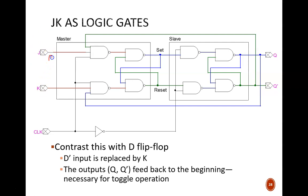Previously, D functioned like J, and it was also branched into a NOT gate to serve as the K signal. But now we have K, and it feeds straight into this bottom NAND gate.